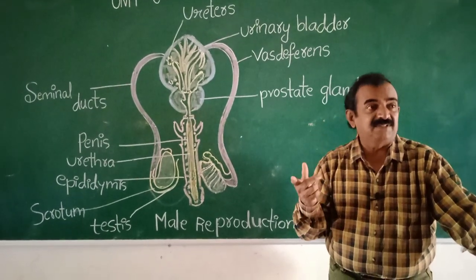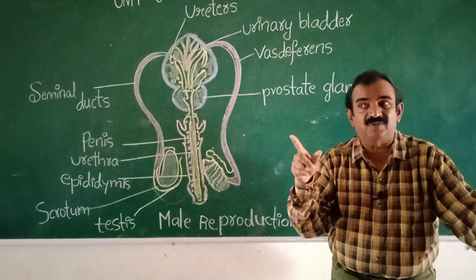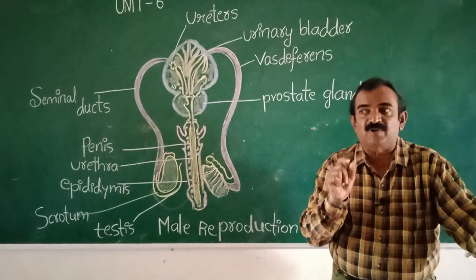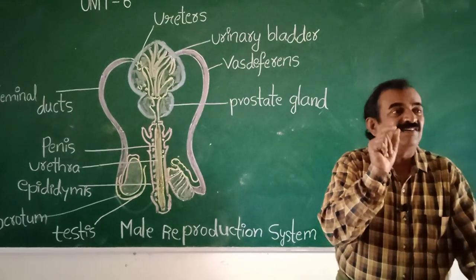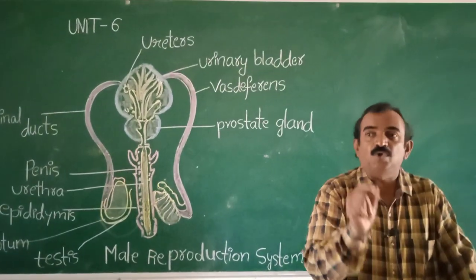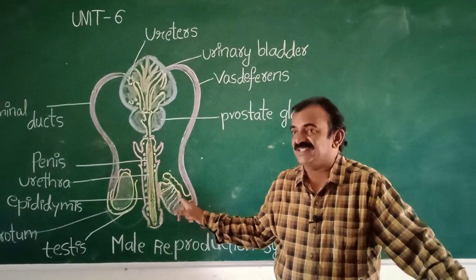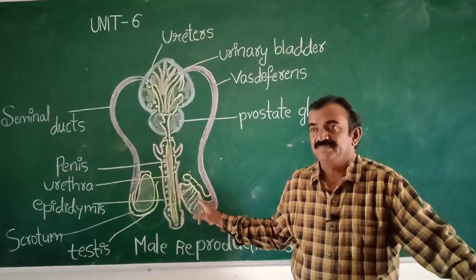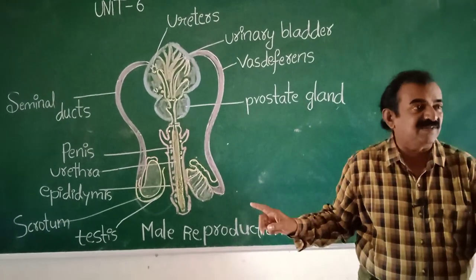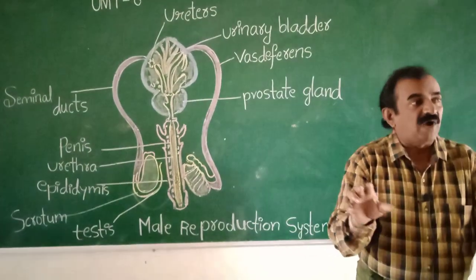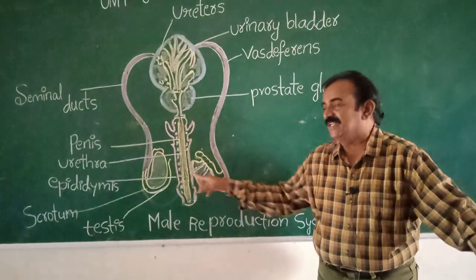Sperms are male gametes. The structure of spermatozoa is given on page 124. Males produce sperms from the testes. Testes have seminiferous tubules containing germinal epithelial cells, which undergo mitotic and meiotic cell division, and finally sperms are produced in the testes.